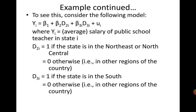The regression model looks like this: Yi = β1 + β2·D2i + β3·D3i + ui, where Yi is the average salary of the public school teacher in state i, β1 is the intercept, D2 equals 1 if the state is in the North East or North Central region, D3 equals 1 if the state is in the southern region and 0 otherwise, and ui is the usual error term.